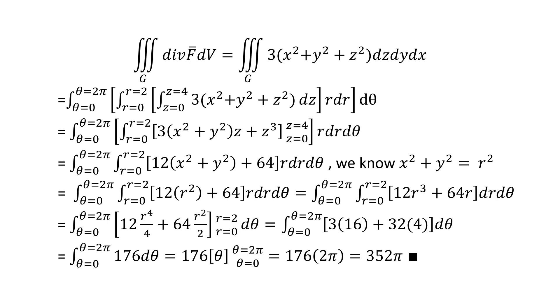Integrating with respect to theta: 136 is a constant, so the integral of 136 dθ from 0 to 2π, substituting the limits, gives the final answer as 272π.